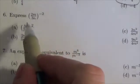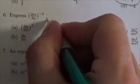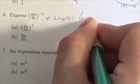Express 2m over 3n to the negative 2. Basically it should say express this in simplest form here, probably should have that in simplest form.